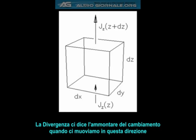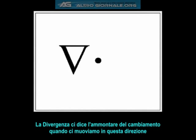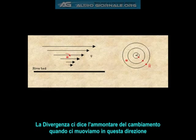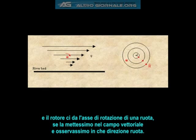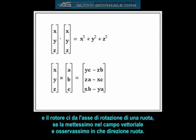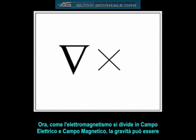The divergence is designated by a gradient dot product operator — the upside-down triangle with a period next to it. And the curl gives us the axis of rotation of a paddle wheel if we were to place it in the vector field and see which direction it rotated. The curl is designated by the cross product: the delta operator followed by an X.